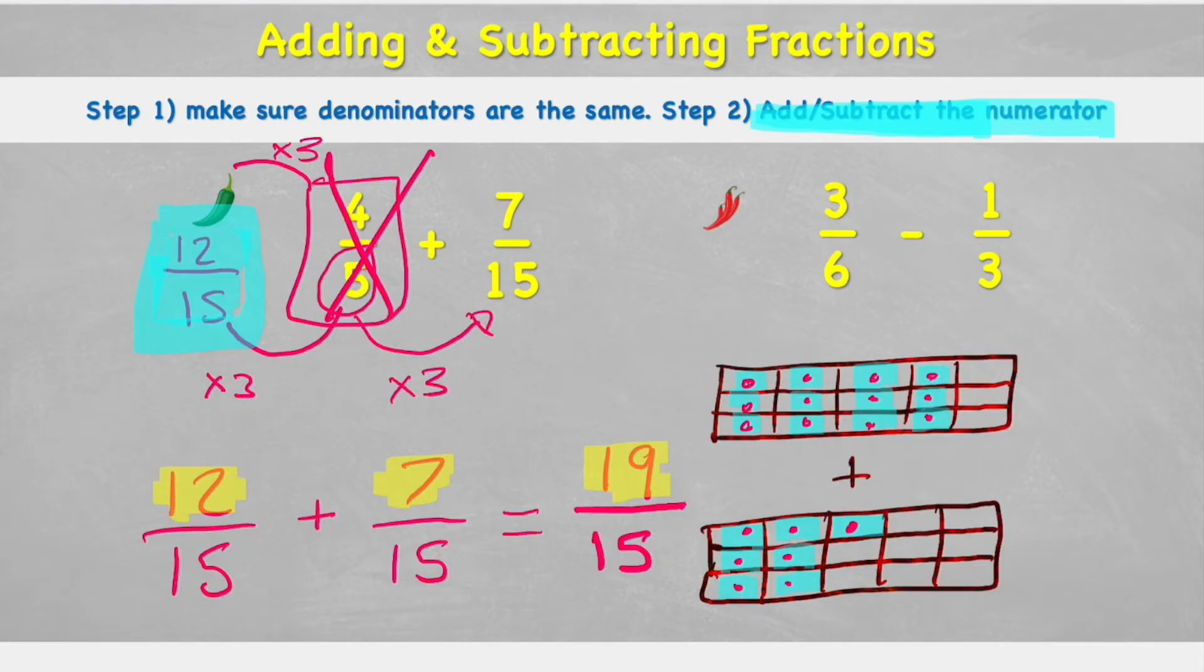Now for you super whizzes out there, you will notice that this 19 fifteenths is what we call an improper fraction because we have a larger numerator than we do denominator. So what I could have done when I'm adding these up, I could have realized that this chocolate bar, this top one is not yet full. So I could have used three from over here and put them in this chocolate bar while adding up.